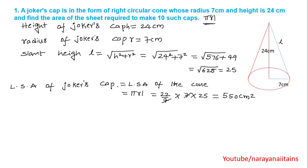So, it is the area of 1 cap. The question is asking the area of the sheet required to make 10 such caps. Area of 1 cap is 550 cm². So, area of 10 caps means 10 × 550.